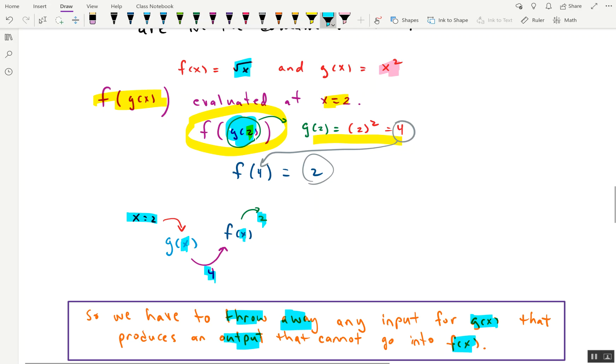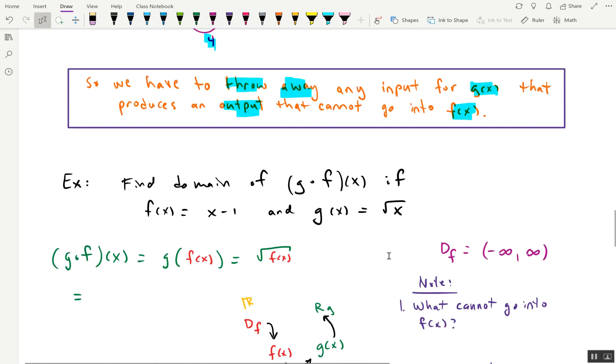Normally with domain, we say kick out problems that you can't put in because they give us issues. But now we've kind of got a function within a function, so we have to be a little bit more careful. So we have to throw away any input of g that produces an output that cannot go into f.